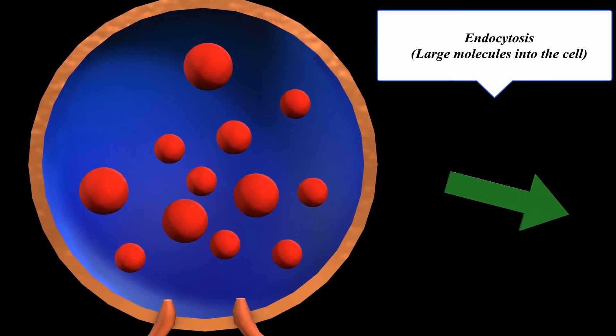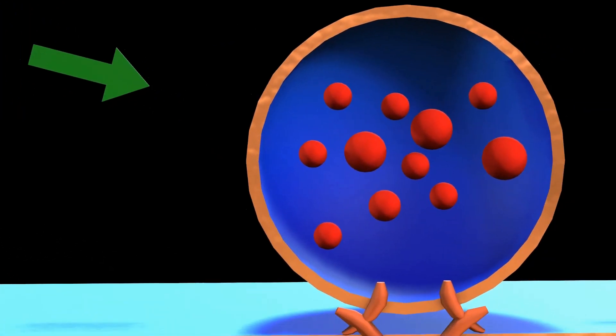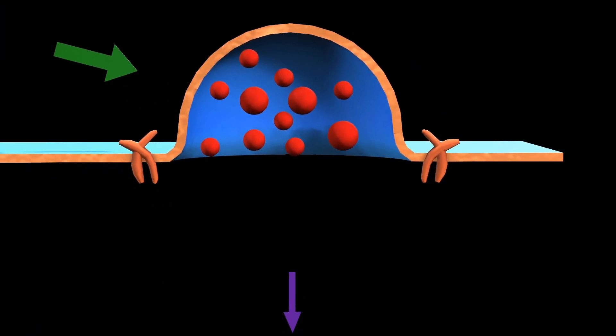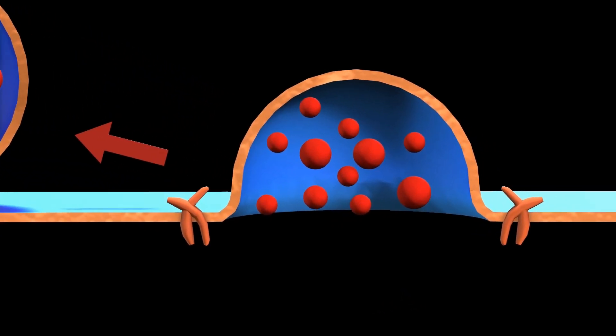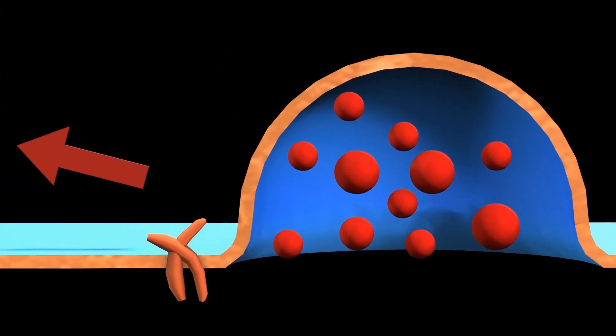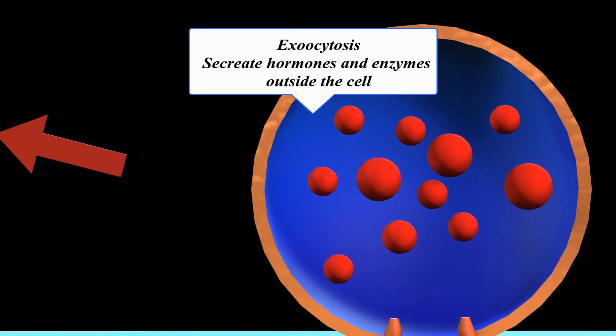Endocytosis transports large molecules or even whole cells by engulfing them. Exocytosis removes or secretes substances such as hormones or enzymes outside the cell.